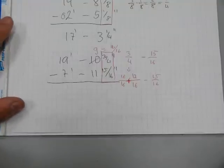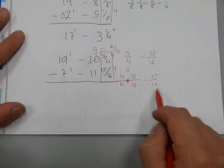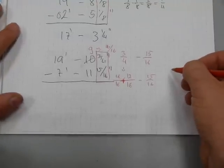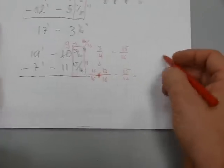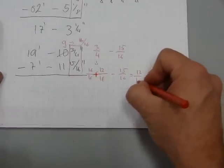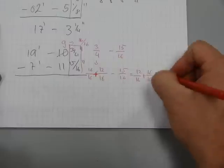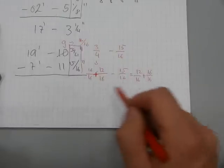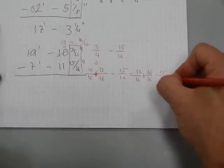We can also rearrange this 1 addition and 1 subtraction to make it look like just rearranging the terms. 12 sixteenths plus 16 sixteenths. It's the same so far. I just changed the order. Minus 15 sixteenths.